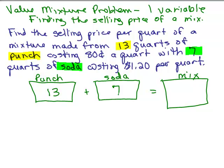So do we know how much liquid is in the mixture? Well, we're pouring in 13 quarts plus 7 quarts. We have a total of 20 quarts.